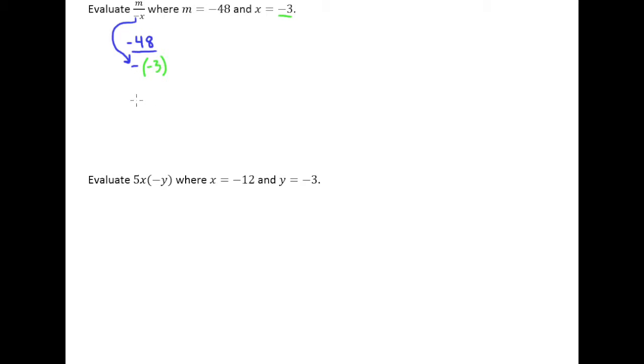Now of course we know that the opposite of negative 3 is just 3. So now that simplifies to negative 48 divided by 3.